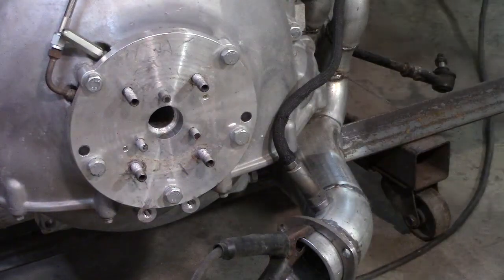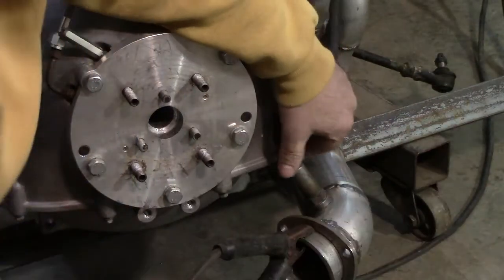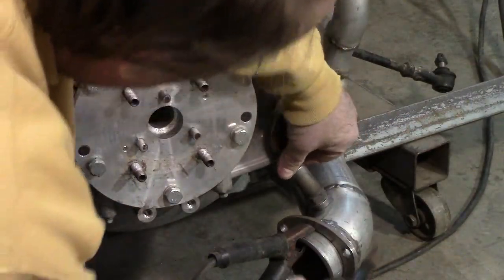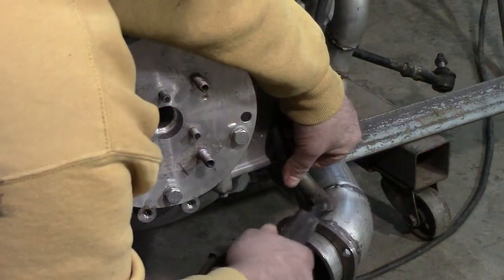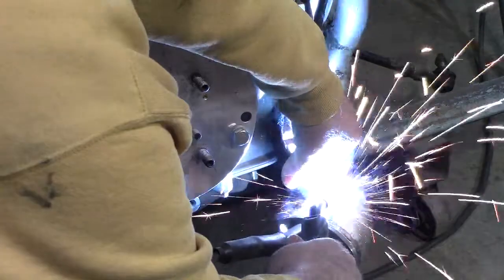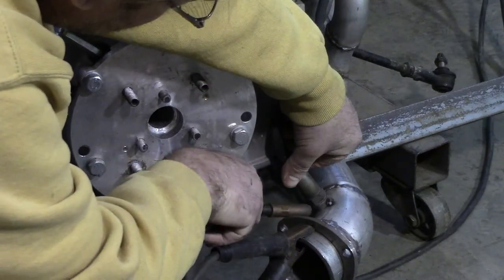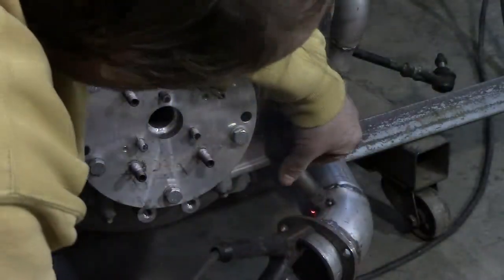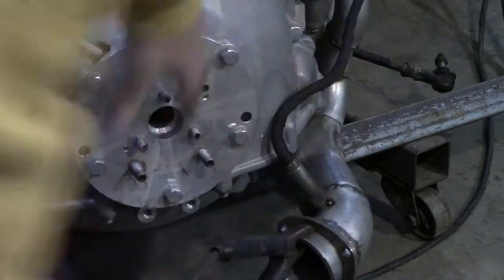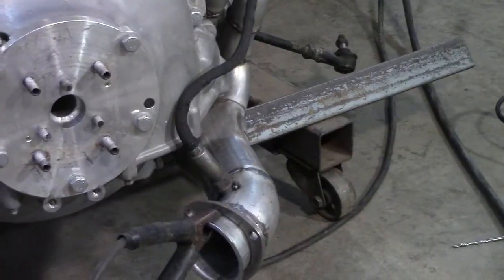And it's as simple as taking a MIG welder, getting lined up on the height-wise of this, and tacking it in place on opposite sides. There we go. With it tacked in place, we're ready to do a continuous weld around the hole outside of it.